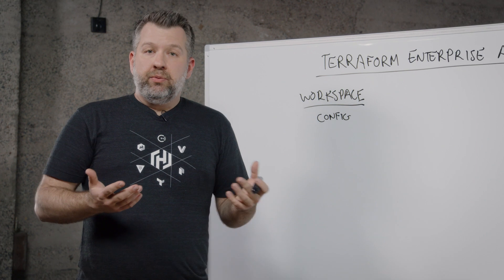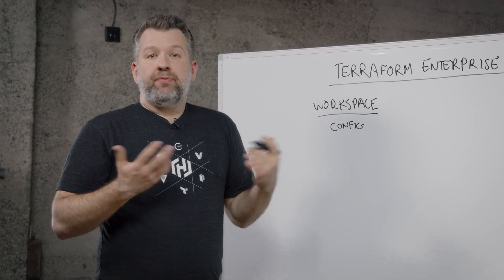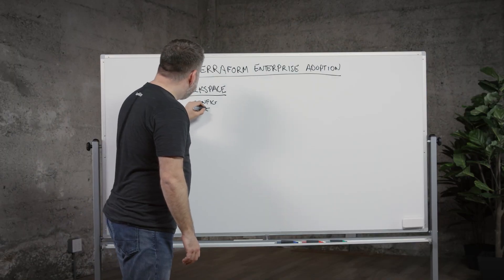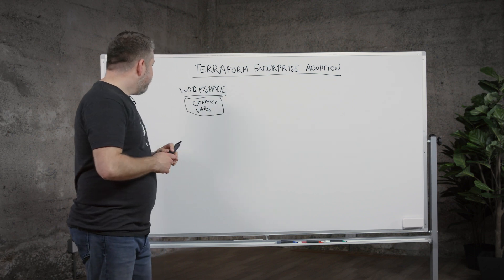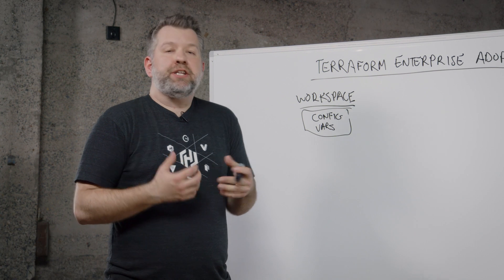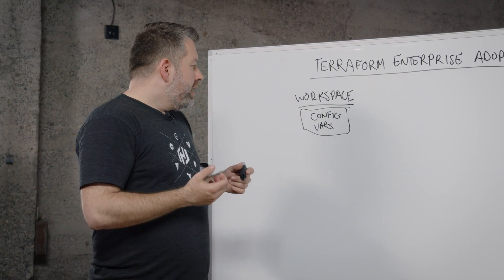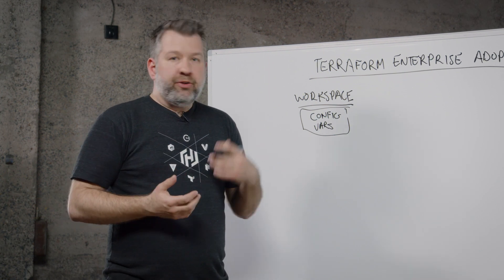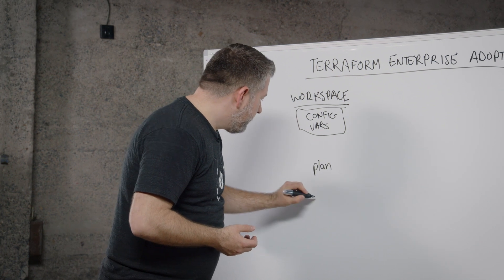The next thing we need to do after we have our configuration is to provide some variables for those configuration files. Now that we have our configuration and our variables, we want to take them and actually do something with it — we want to apply these changes to our environment. In Terraform open source, we split things up into a plan phase and an apply phase.